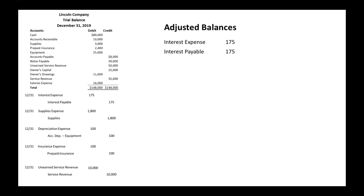Supplies expense: when we take a look at our trial balance, we don't see any supplies expense on there, so the supplies expense balance will just be $1,800. Supplies: we had $3,000 worth, and then we credited supplies for $1,800 in our adjusting entry, so its balance is now $1,200.